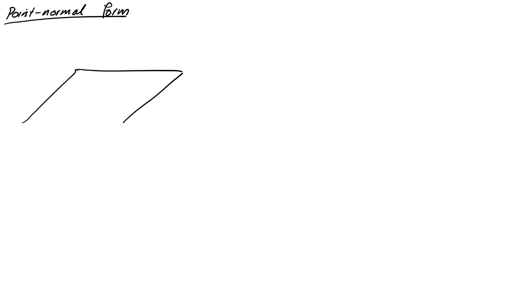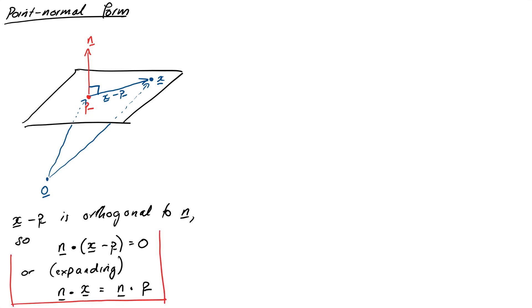So suppose we know a point P on the plane, and we also know a normal vector N. Then if we consider a general point X on the plane, then just as it was for lines, the vector X minus P sits on the plane, so it's aligned with the plane, and therefore it's orthogonal to the normal vector. So we can write this down mathematically as N dot X minus P is equal to zero. Alternatively, we could expand out the dot product to rewrite this as N dot X equals N dot P. These are both different ways of writing the equation of the plane in point normal form.